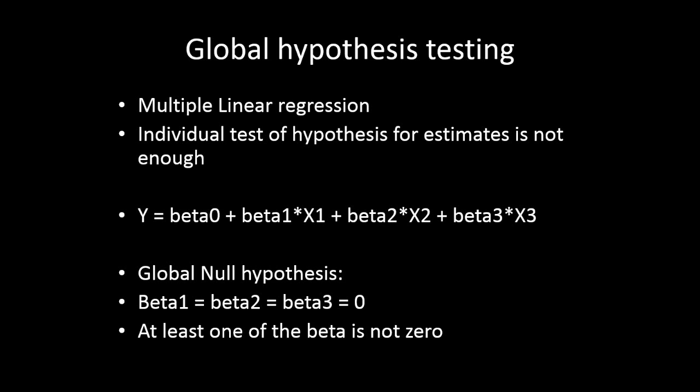And then we try to explain the model. But in multiple linear regression, we simply cannot go to the p-values of individual estimates. Before that, we need to see what is known as a global null hypothesis. Let me first define what is global null hypothesis and why it's so important.